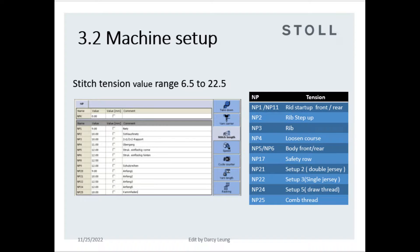Stitch tension value range: 6.5 to 20.5. MP1 and MP11 are rib start front and back rib. MP2 for tubular startup rows. MP3 for rib tension. MP4 loosen course. MP5 and MP6 for main body front and back. MP17 for ending safety rows. MP21 to 24 for startup preparation rows. Normally no need to change MP values, as they handle the feel. Just watch for yarn breaking.